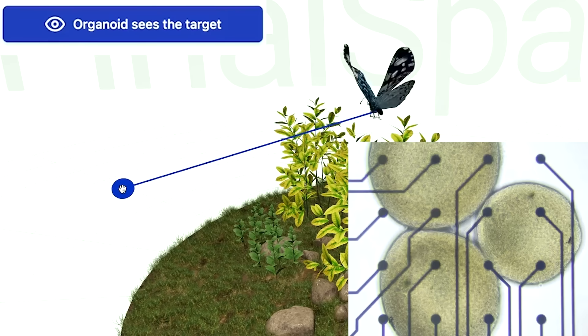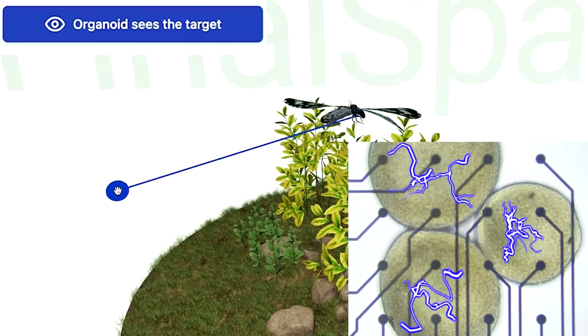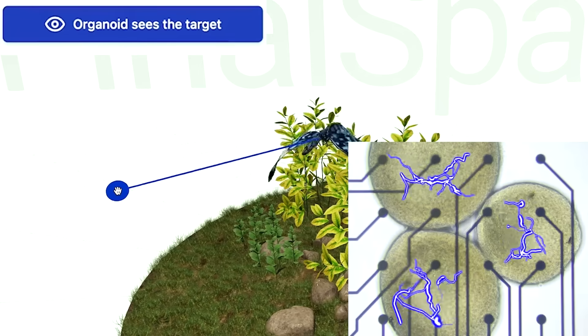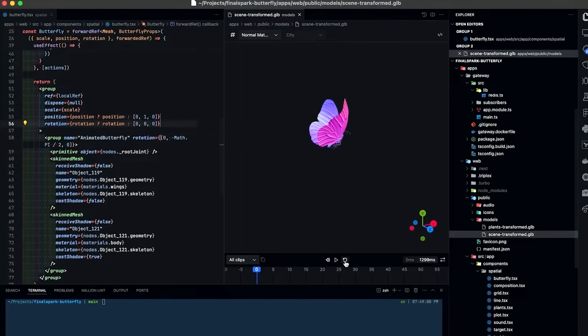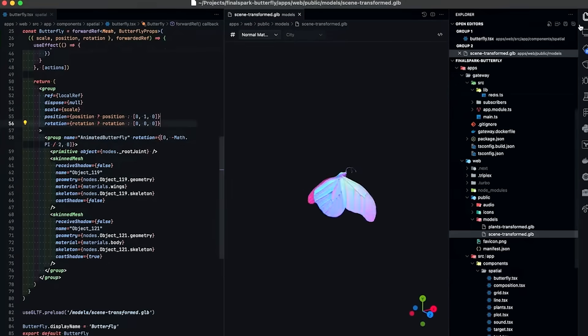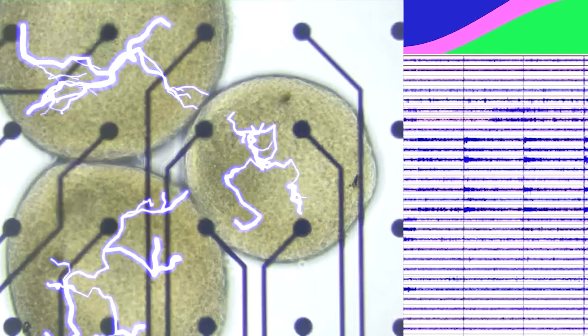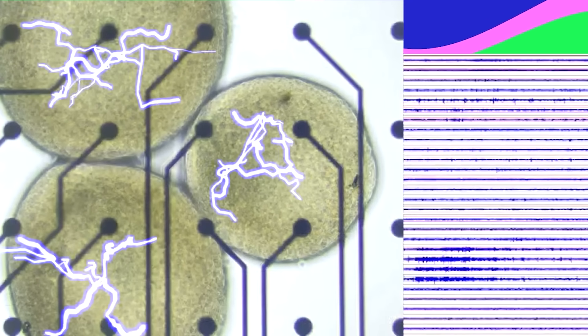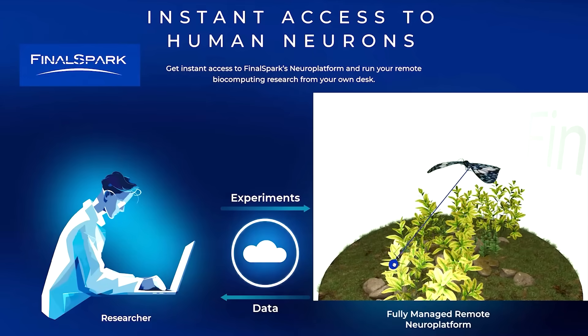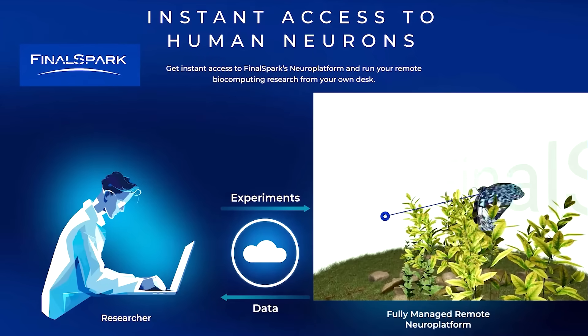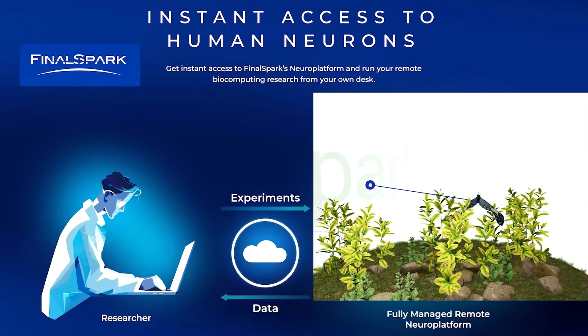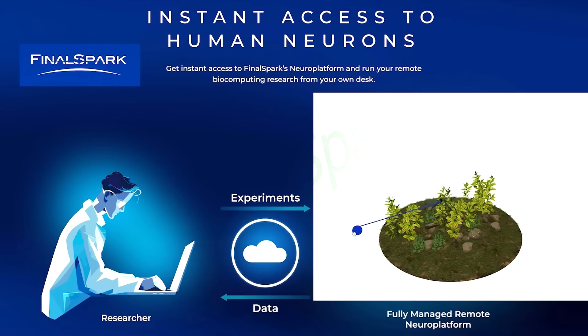The appeal is energy efficiency. A human brain uses about 20 watts, far less than AI supercomputers. Potential applications include ultra-efficient machine learning systems or hybrid biological digital processors. The field also raises ethical debates about sentience and consciousness in lab-grown tissues. Current research focuses on improving training methods and scaling neural capacity without crossing ethical or legal boundaries.